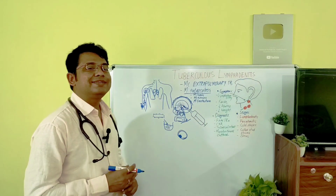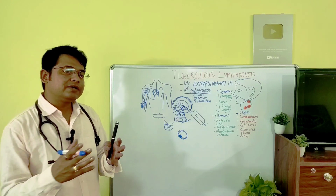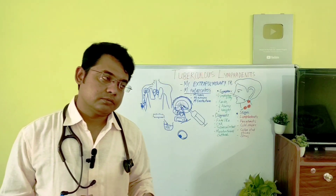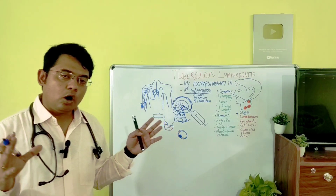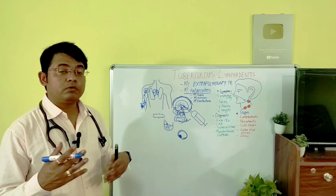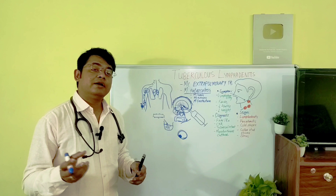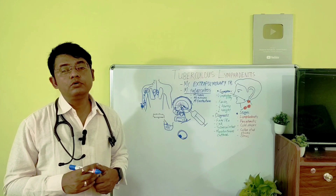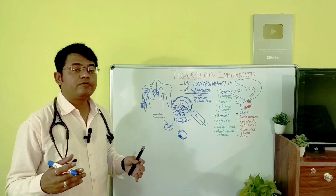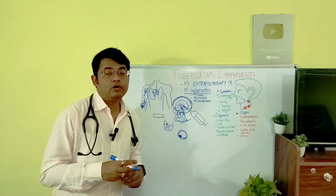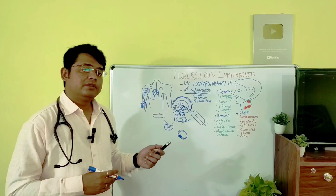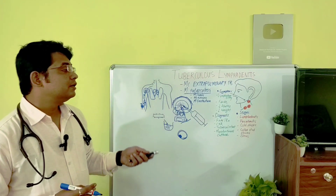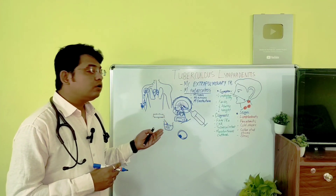Regarding treatment, there are several antibiotics given as a regimen: isoniazid, pyrazinamide, ethambutol, and rifampicin are the commonly used drugs. These are given as a regimen, sometimes under direct observation. To cure this condition, you must stick to the schedule provided by your healthcare provider. If you have any problems, consult your local physician and take medicines according to their guidance.